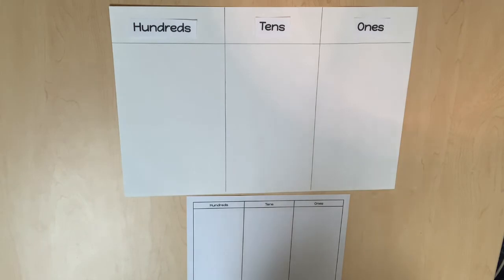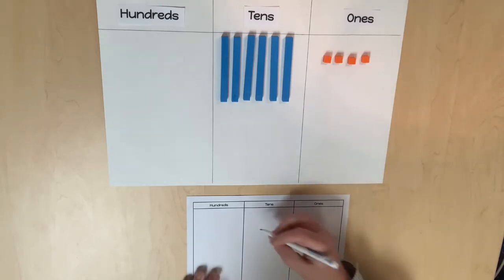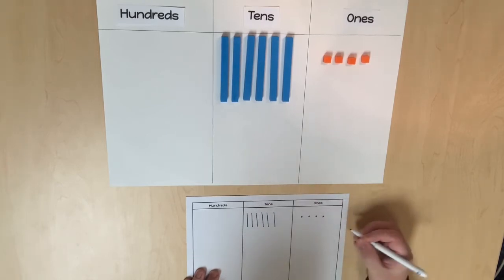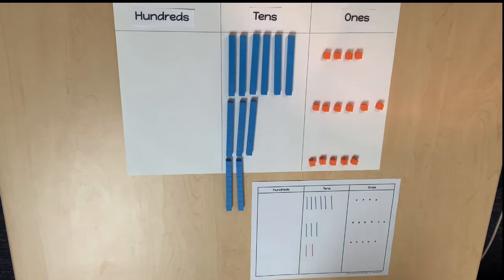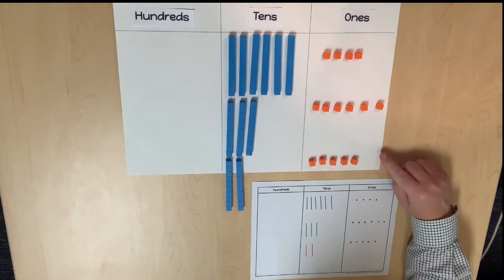Model 64 on the place value chart with base ten blocks. Using a colored pencil, create a pictorial representation using lines and dots. Continue this with each amount of cookies using a different colored pencil for each type of cookie. Consider the fifteen ones — are there enough ones to compose a ten?